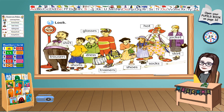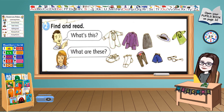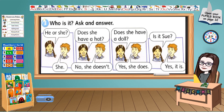Find and read. This is asking a question: What's this? Because we're talking about only one — shirt, jacket, skirt, hat, dress. Next one: What are these? Because we're talking about two or more — shoes, socks, trousers, shorts, glasses.